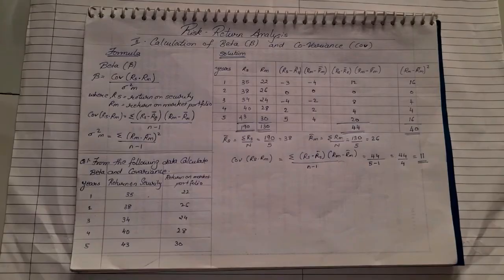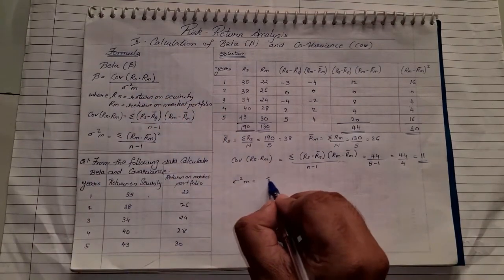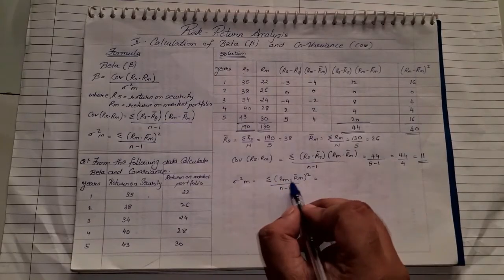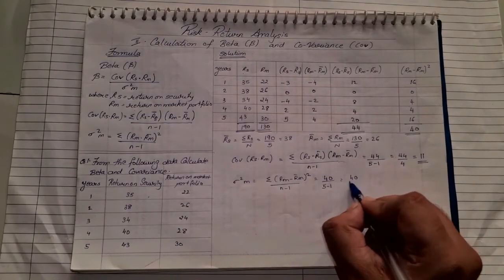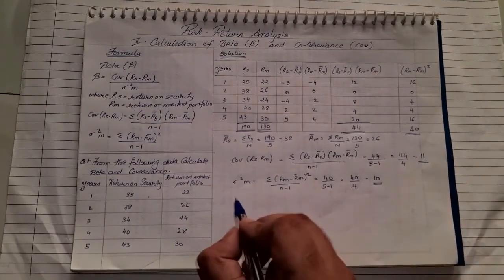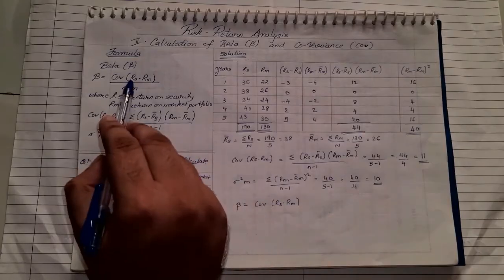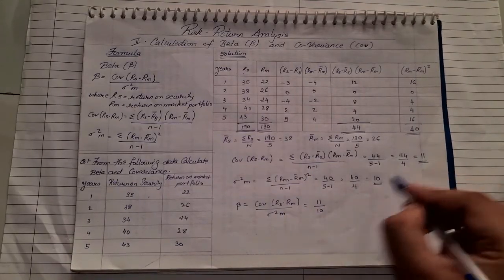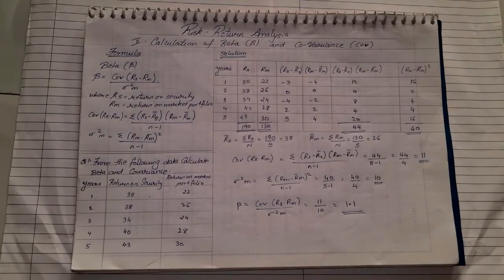Next, we find standard deviation squared M = summation of (RM minus R-bar-M) squared upon N minus 1 = 40 divided by 4 = 10. Now applying the beta formula: beta = covariance upon standard deviation squared M = 11 divided by 10 = 1.1.